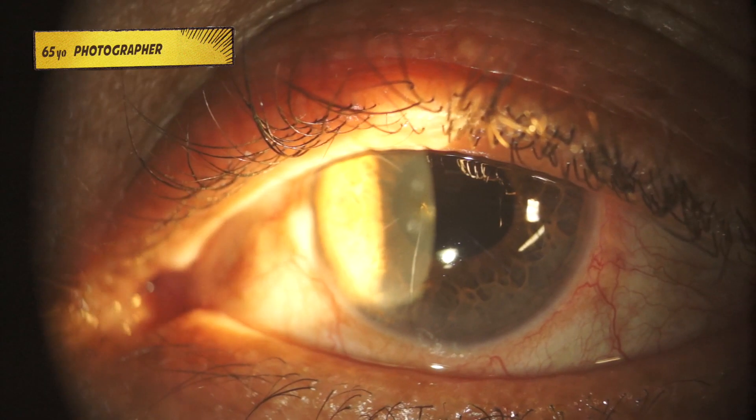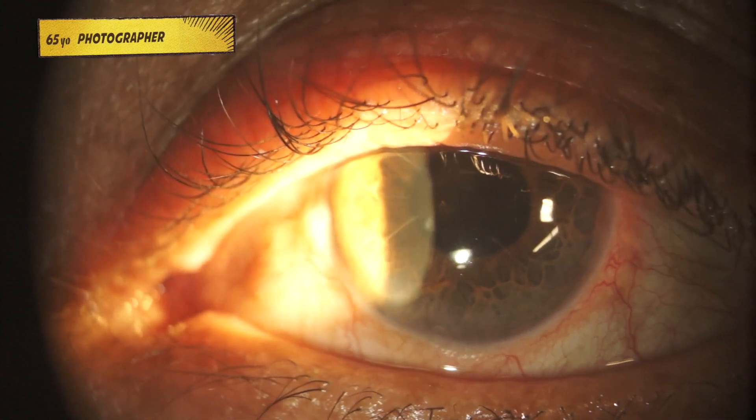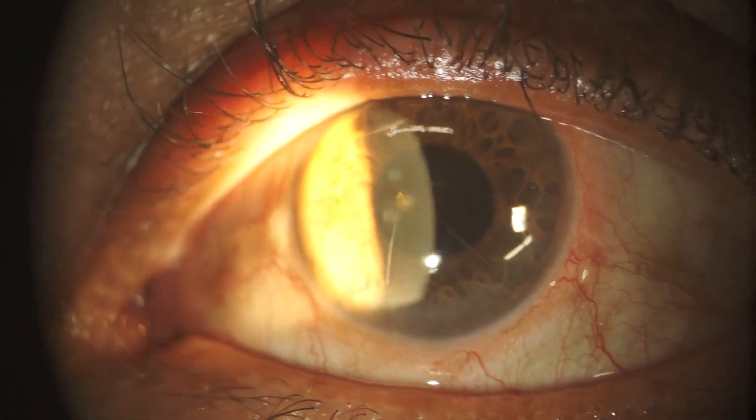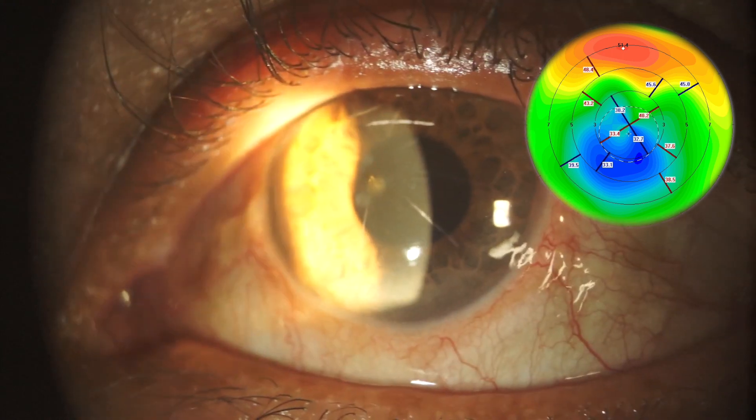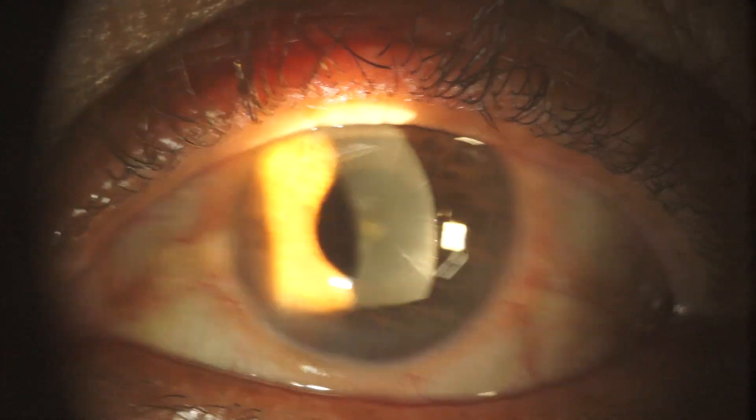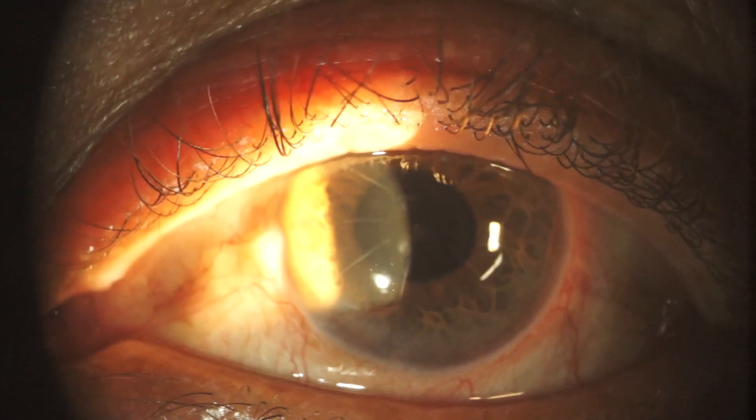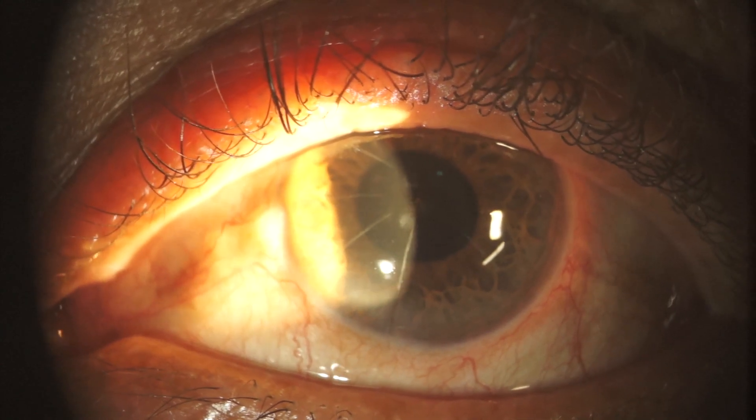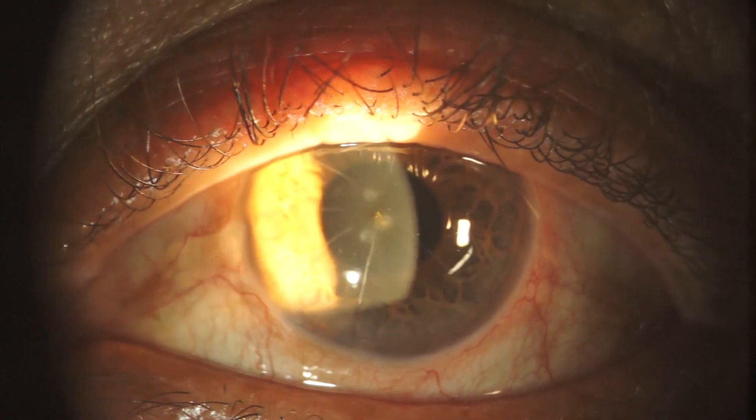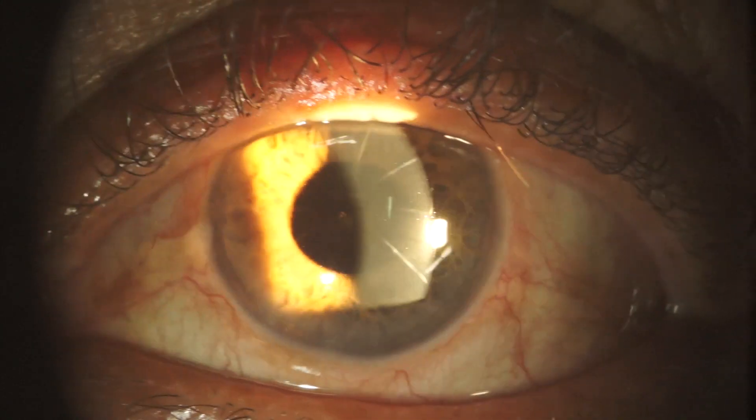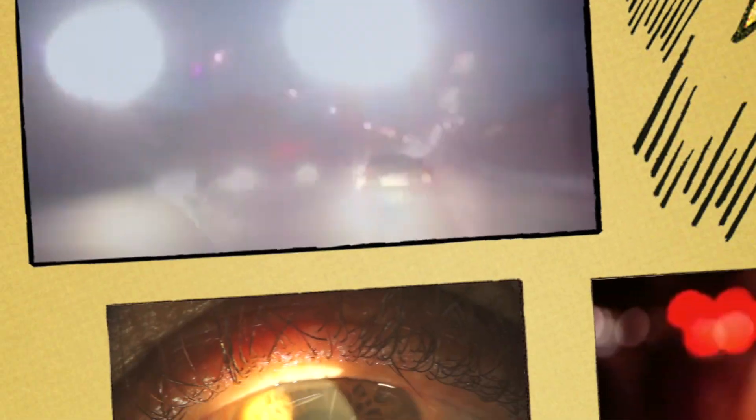This 65-year-old patient underwent radial keratotomy in the past and was left with severe corneal irregularity. Note the size of the pupil in relation to the RK optical zone. Not surprisingly, after bilateral cataract surgery, he complained of glare and severe starburst and was very disappointed with his cataract surgeon. What can we offer to those patients?